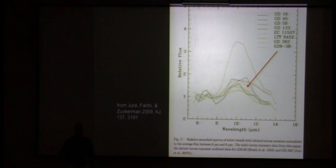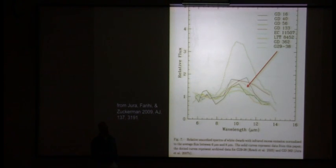The interesting thing is all of the white dwarfs that have these infrared excesses, that have dust going around them, also have metals in their atmosphere.